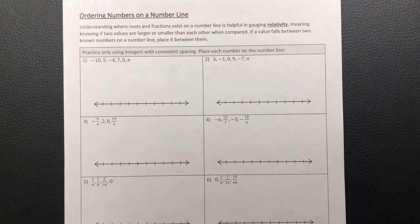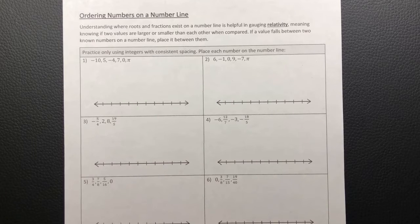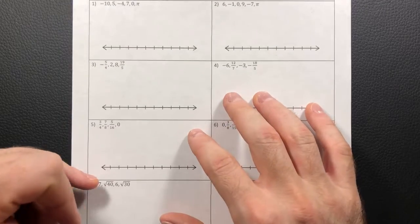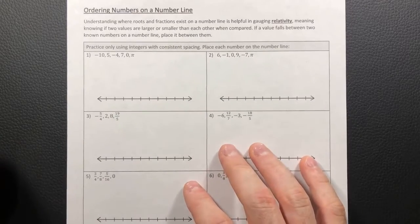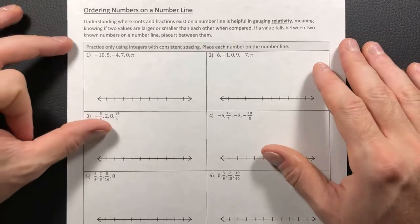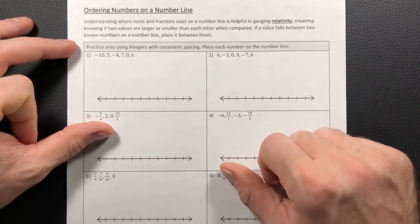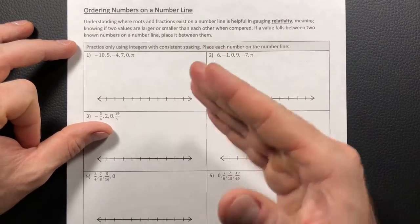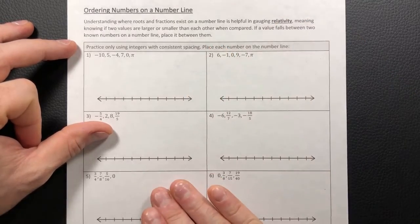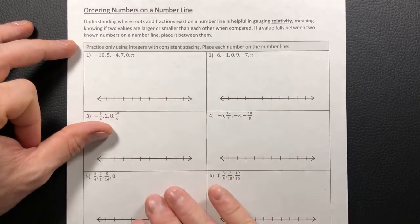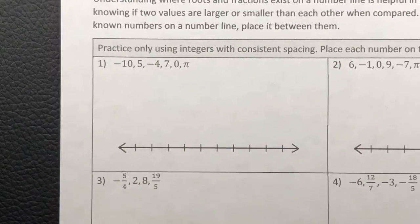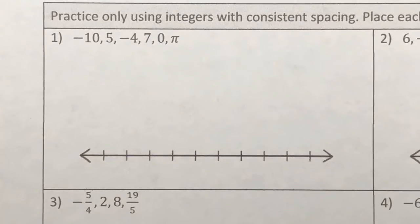Today we're going to be ordering numbers on a number line, which means we're going to take some of the skills we've learned in past videos, such as estimating fractions as decimals and estimating square roots as decimals, so that we can place them in order on this line. This concept is going to be gauging the number's relativity — we'll see how exact we absolutely need to be in order to figure out where things go.